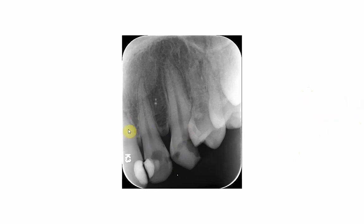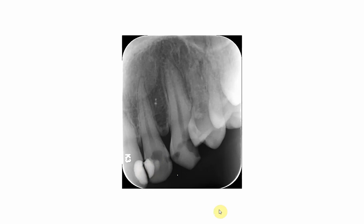In this periapical radiograph of the central, lateral, and canine — with overlapping premolars — there is extensive caries in all these teeth. We have composite fillings: a class 3 filling here where the incisal tip is not yet involved, and another class 3 here with poor contact, recurrent caries underneath. On the pulpal floor and axial wall of the cavity, you can see another material of lesser radio-opacity compared to the composite filling — this is a liner.